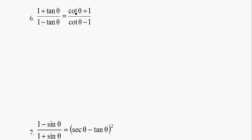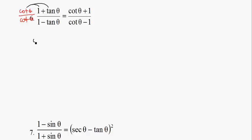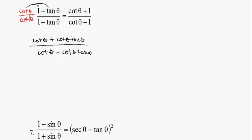Here's the easiest one of the day. I need cotangent on top and cotangent on the bottom, so I'm just going to multiply by cotangent theta over cotangent theta on the left-hand side. Distributing: I get cotangent theta plus (cotangent theta times tan theta), all over cotangent theta minus (cotangent theta times tan theta). Everybody recognizes these are reciprocal functions, so when you multiply them you get 1. So that simplifies to (cotangent theta plus 1) over (cotangent theta minus 1). I'm done — as opposed to the previous problem, this one's pretty straightforward.